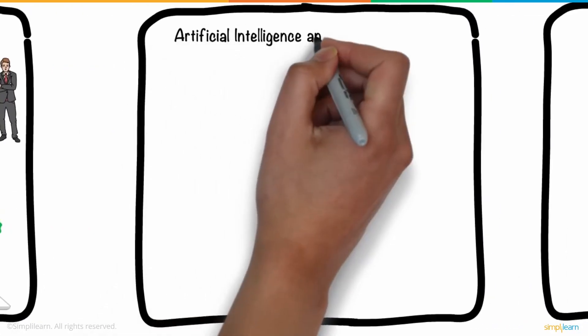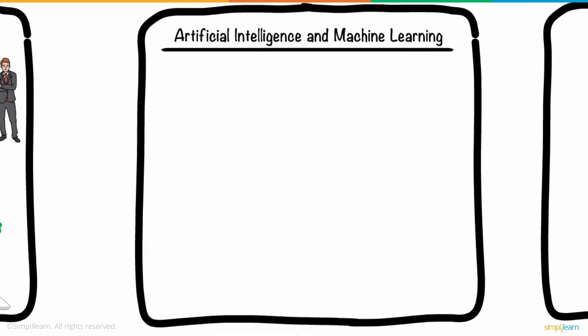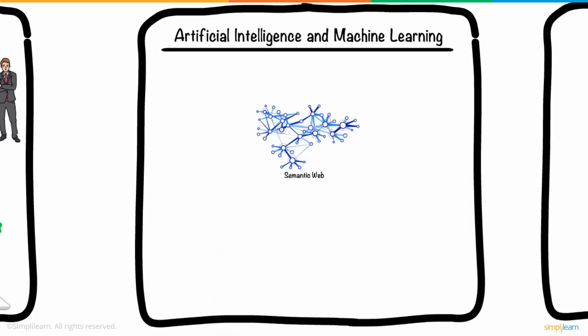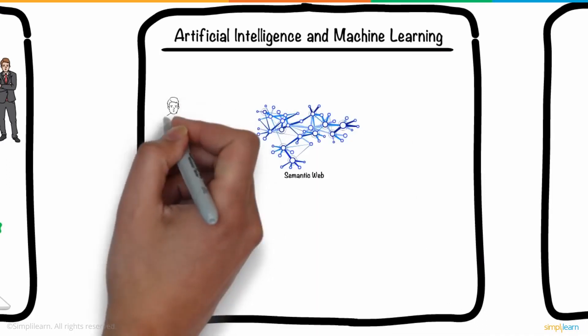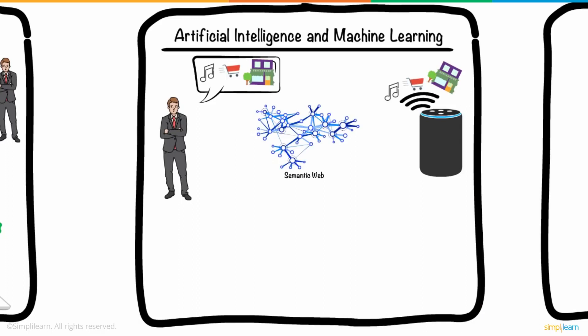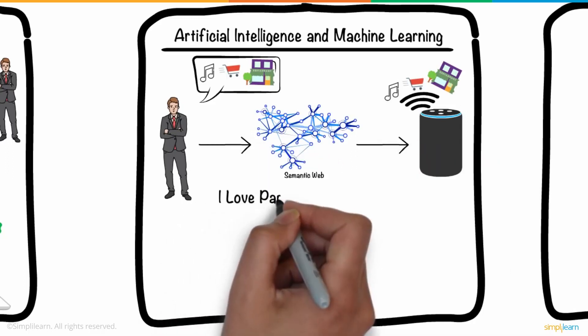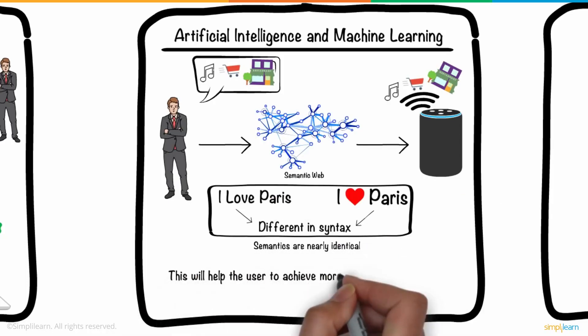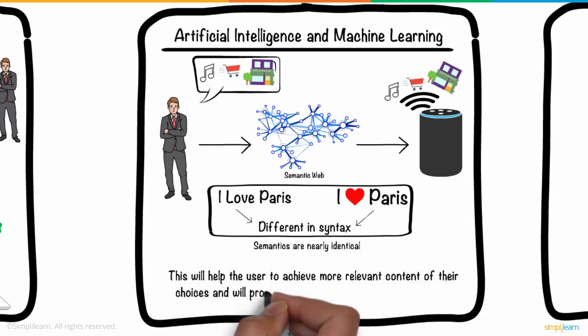Third is artificial intelligence and machine learning. In Web 3.0, through technology based on semantic web ideas and natural language processing, computers will be able to understand the information in the same way that people do. For example, I love Paris and I heart Paris may seem different in syntax. However, their semantics are nearly identical. This will help the user to achieve more relevant content of their choices and will provide them ease with internet browsing.